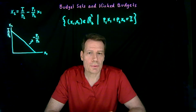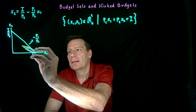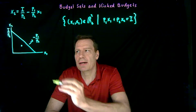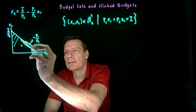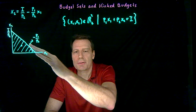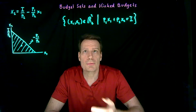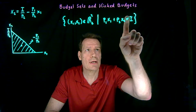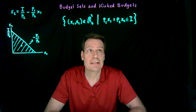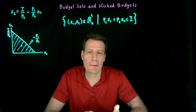Those are not the only bundles affordable to you — they're just the bundles where you spend all of your income. You could choose a bundle where you have some income left over. In fact, all bundles that lie below the budget line are affordable to you; you just have some money left over. That set created by the budget line and all points below it is called the budget set — all affordable bundles. In set notation, we change the equality to an inequality: spending must be less than or equal to income.